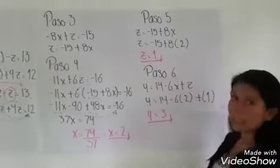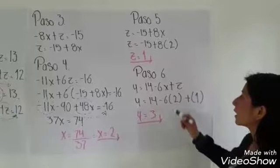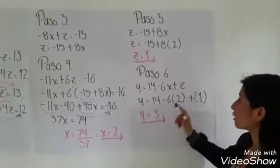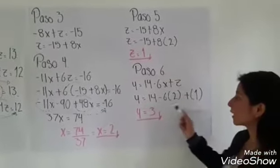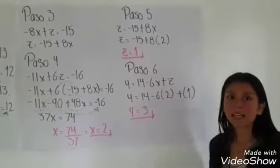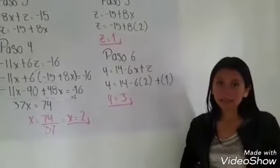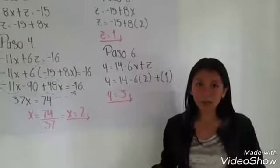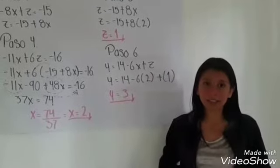En el paso 6, lo único que vamos a realizar es sustituir los números que nos habían salido en X y en Z. El resultado es Y igual a 3. Y aquí se tienen los tres valores de las tres incógnitas.